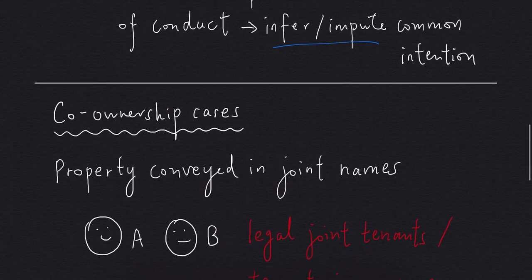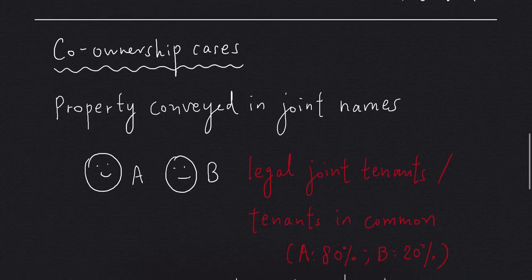Let's say we have a property that has been conveyed in the joint names of A and B. So A and B can be legal joint tenants or tenants in common.